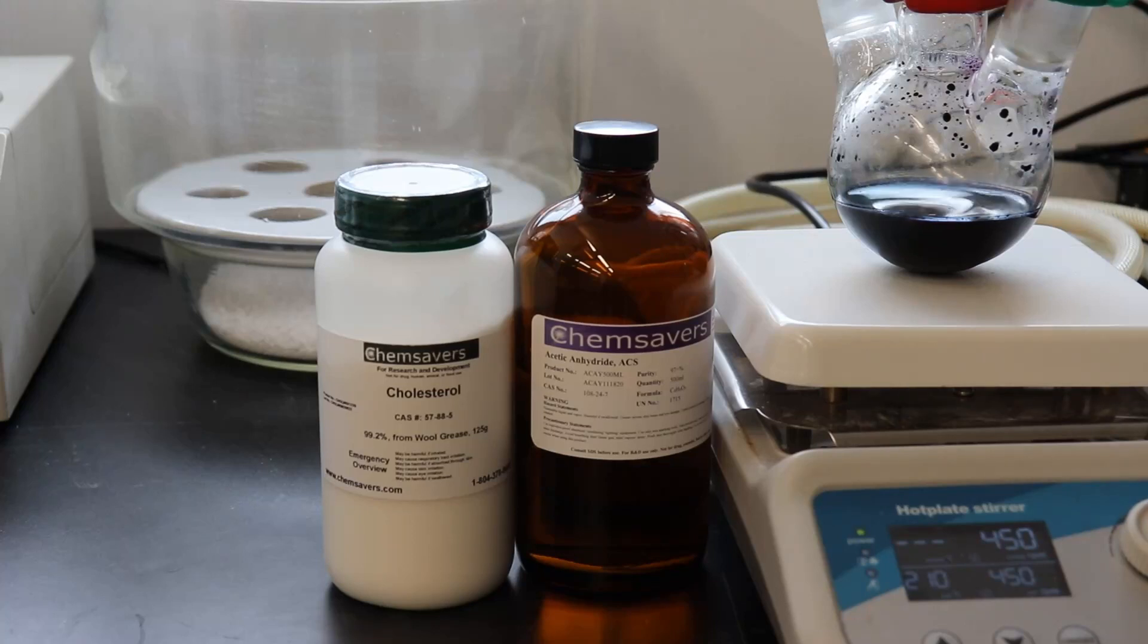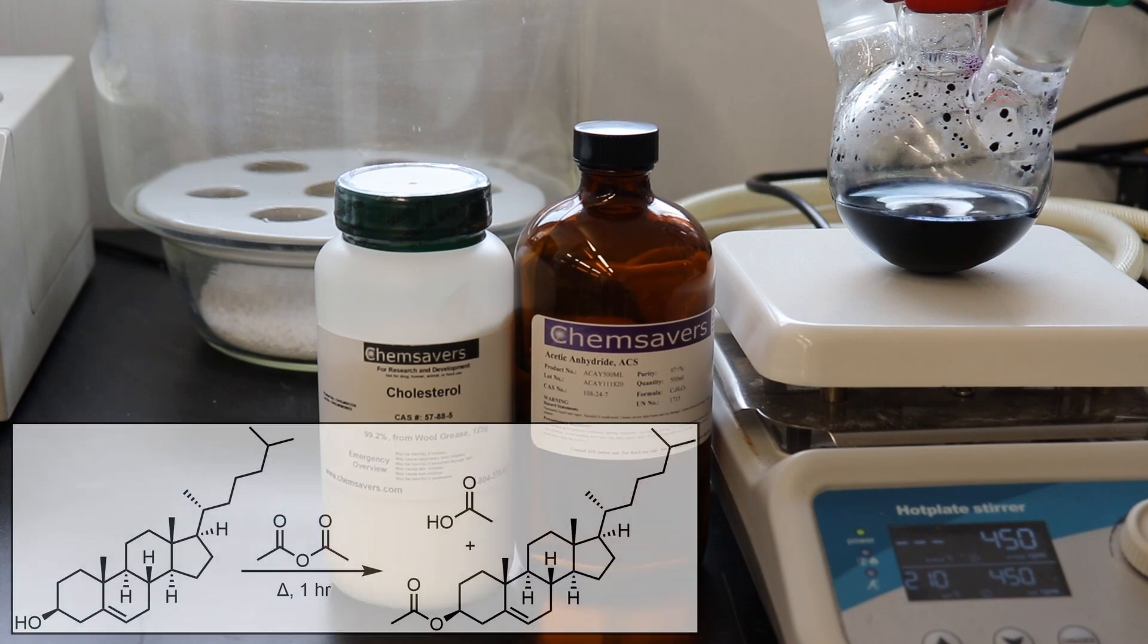In this video, I will demonstrate the esterification of cholesterol with acetic anhydride to form cholesterol acetate. The acetylation of the alcohol group serves to protect it from unwanted reactions when doing chemistry at the alkene.